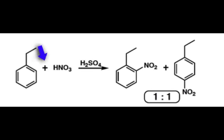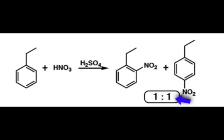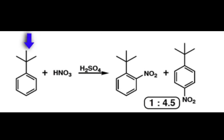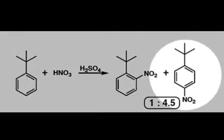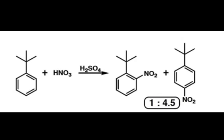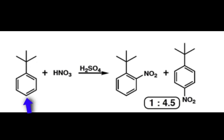When ethyl benzene is nitrated under the reaction conditions that we have learned in this lesson, the nitro group is added in both the ortho and para positions in a 1 to 1 ratio. However, when tert-butyl benzene is nitrated under the same conditions, the product ratio changes and the para substitution product dominates. Knowing that the electronic properties of both the ortho and para intermediates are very similar, it's logical to conclude that the product ratio observed arises through steric interactions. We can attribute this to the tert-butyl group sterically hindering the substitution of the nitro group at both ortho positions and not sterically hindering the para position.